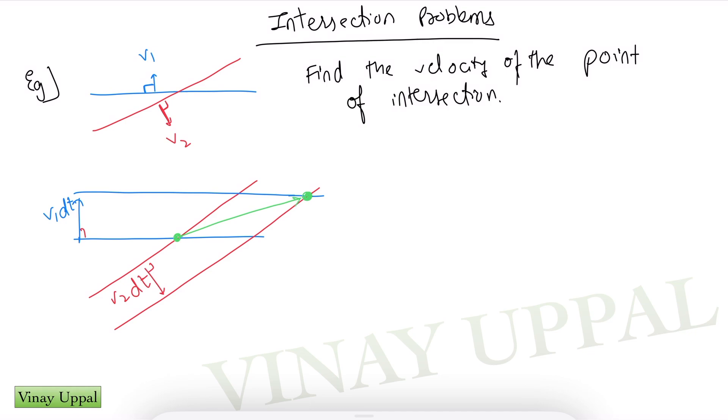So what has happened to the intersection point? The intersection point which was this green point here is now here. So this is the displacement of the intersection point, the green arrow. If I can figure out the displacement and divide by dt, that will give me the velocity. The angle between the lines should also be given to us, let's say that angle is some theta.